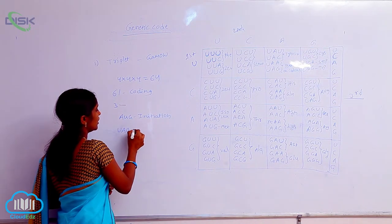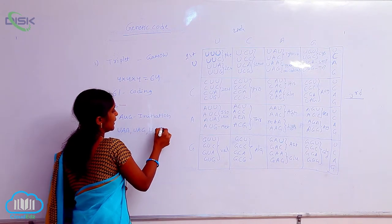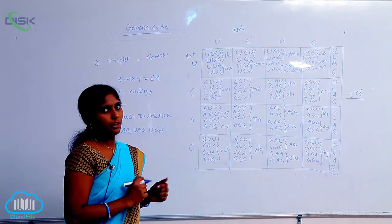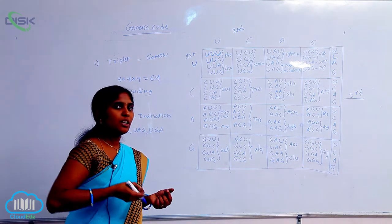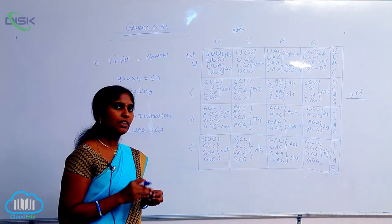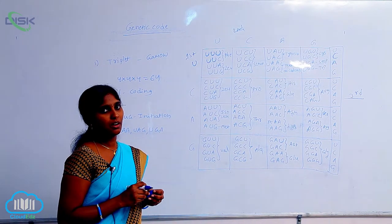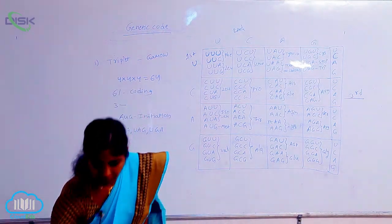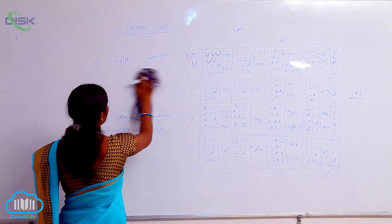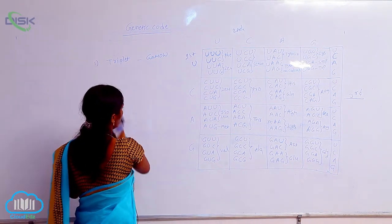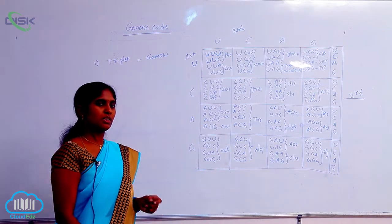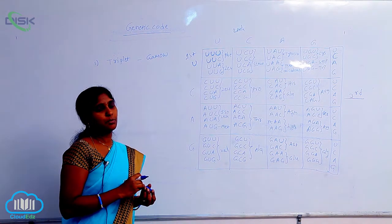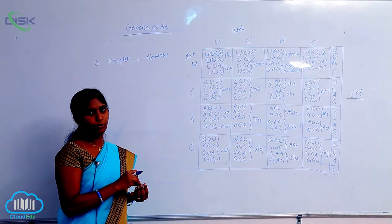When termination codons are present in the mRNA, protein synthesis is stopped. So what are the characteristic features of the genetic code? It must be in triplet form. The genetic code is a sequence of nucleotides in a specific manner, and it specifically codes the amino acid during protein synthesis.